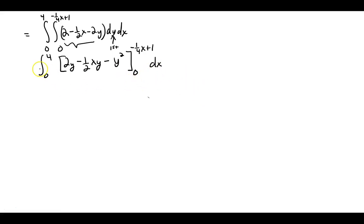So we get 2 times negative 1 fourth X plus 1, minus 1 half of X times negative 1 fourth X plus 1, and then we have to take negative 1 fourth X plus 1 and square it. All of that is your upper limit. Turns out when you plug in 0, your lower limit is going to be 0.